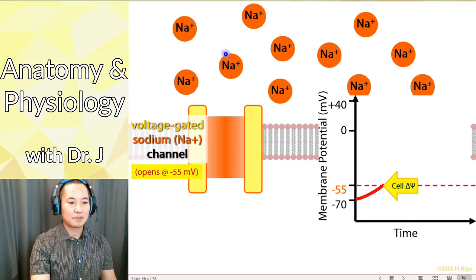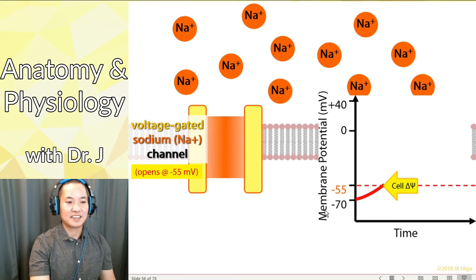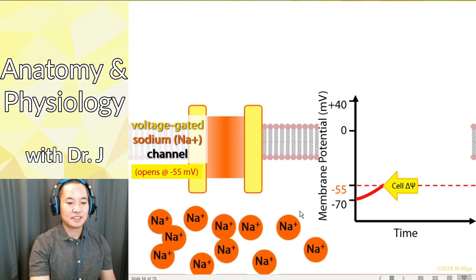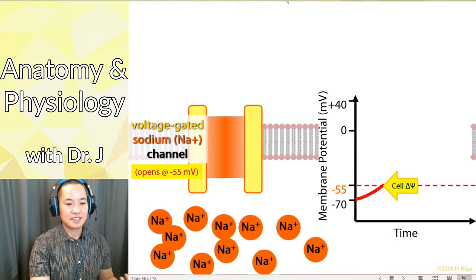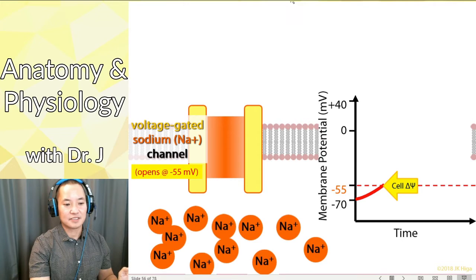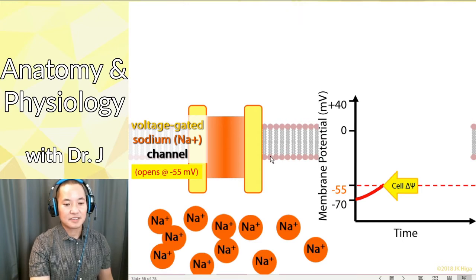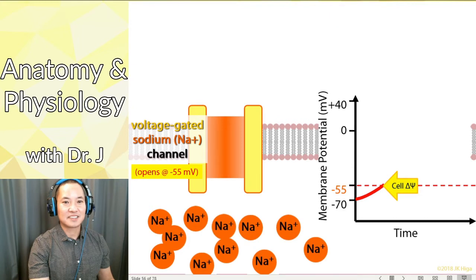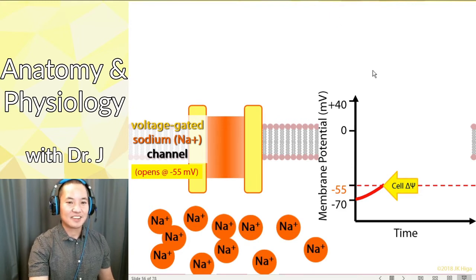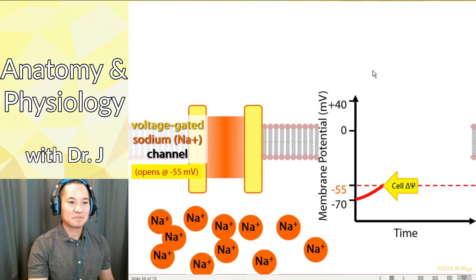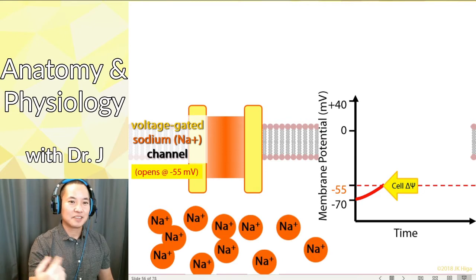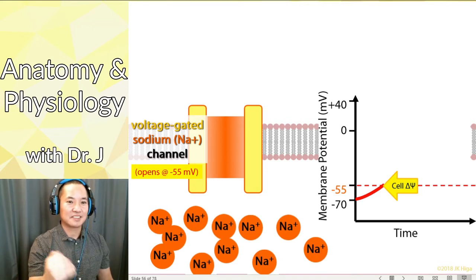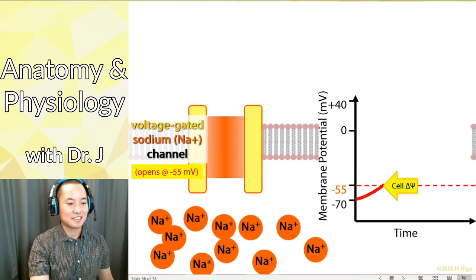But again, in terms of diffusion it moves from high concentrations to low concentrations. Way more sodium on the outside at rest, less on the inside, so the sodium is going to flow in. And what is that going to do to the membrane potential?